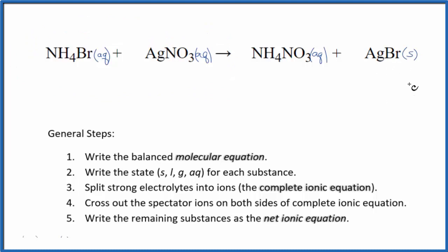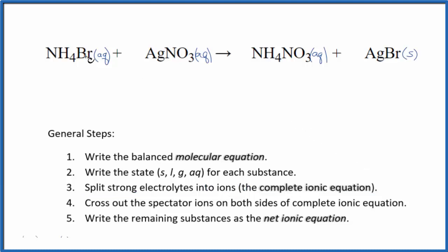These two substances will react and we'll get this solid — it'll fall to the bottom of the test tube in a precipitation reaction. Now that we have the states, we can split the strong electrolytes into their ions for the complete ionic equation. Ammonium always has a 1+ ionic charge, and bromide has a 1− charge, so we'll have NH4+ plus Br−.